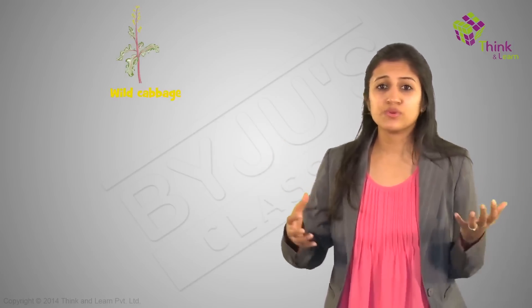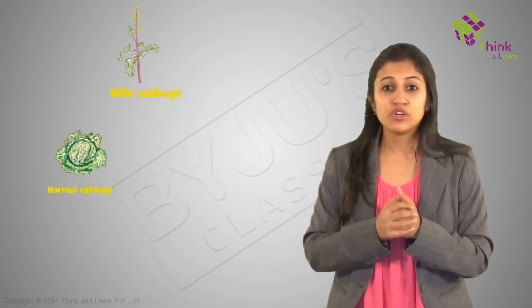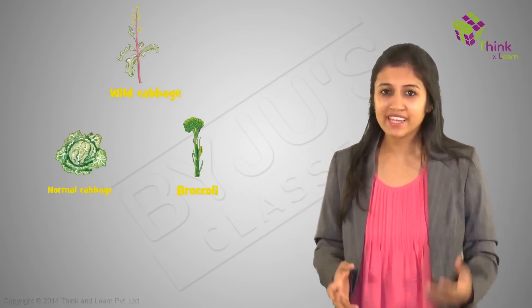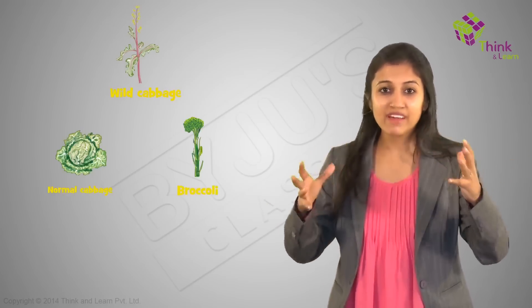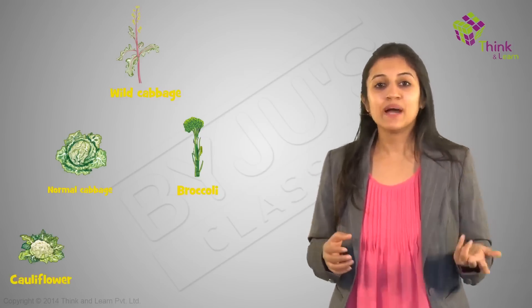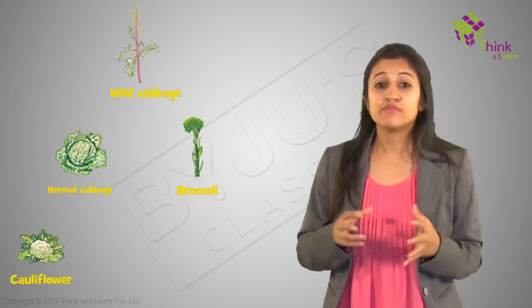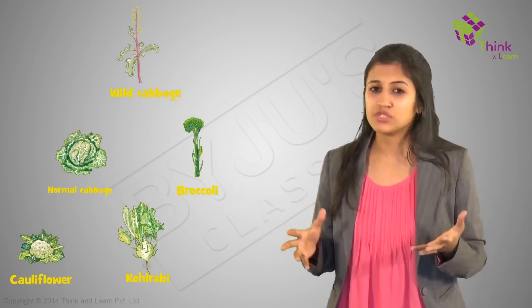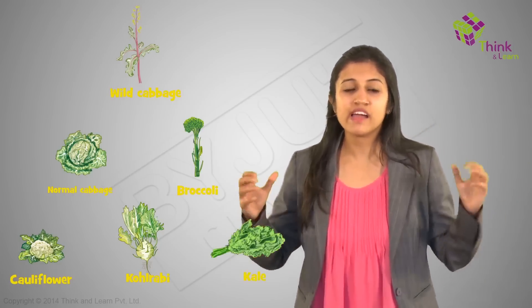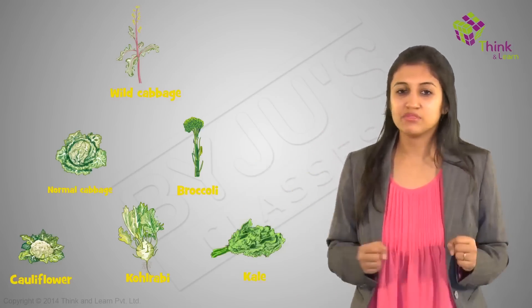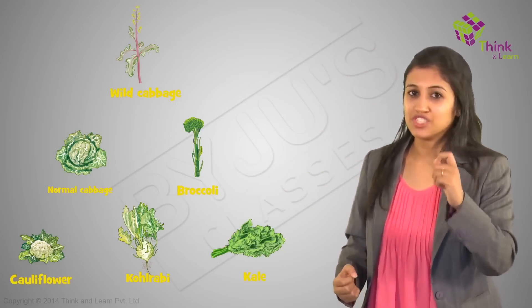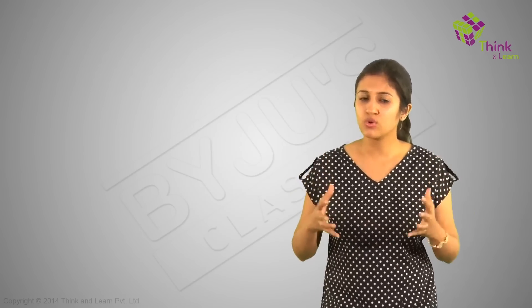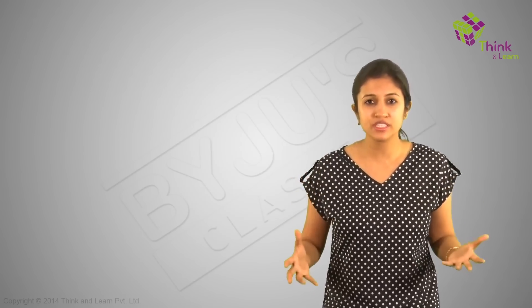Some farmers selected for very short distances between leaves and bred the cabbage we eat. Some selected for arrested flower development and got broccoli, or for sterile flowers and made cauliflower. Some selected for swollen parts and came up with kohlrabi, and some selected for slightly larger leaves and came up with kale. All of these evolved from that single wild cabbage grandparent and are of the same species. But what if the variation gets so severe that it becomes a new species? Let's get into the process of speciation.